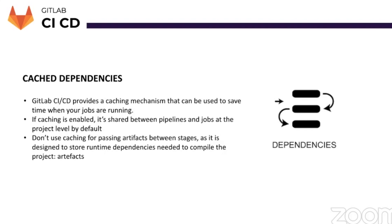The common practice to ensure caching between branches is to use GitLab environment variables such as cache key. A cache key ensures that you are fetching the right file for the job. For example, if you set a cache key by commit branch name, then all the jobs that run for the same branch will use the same cache — meaning you can be pretty sure you don't need to fetch all those dependencies again.